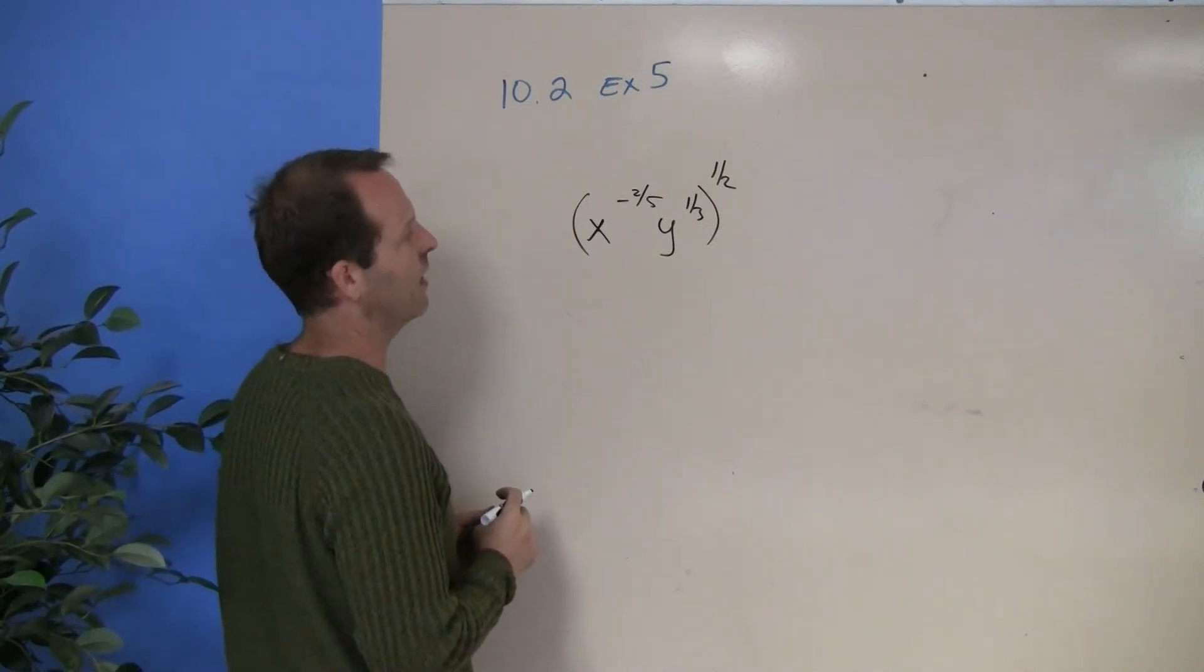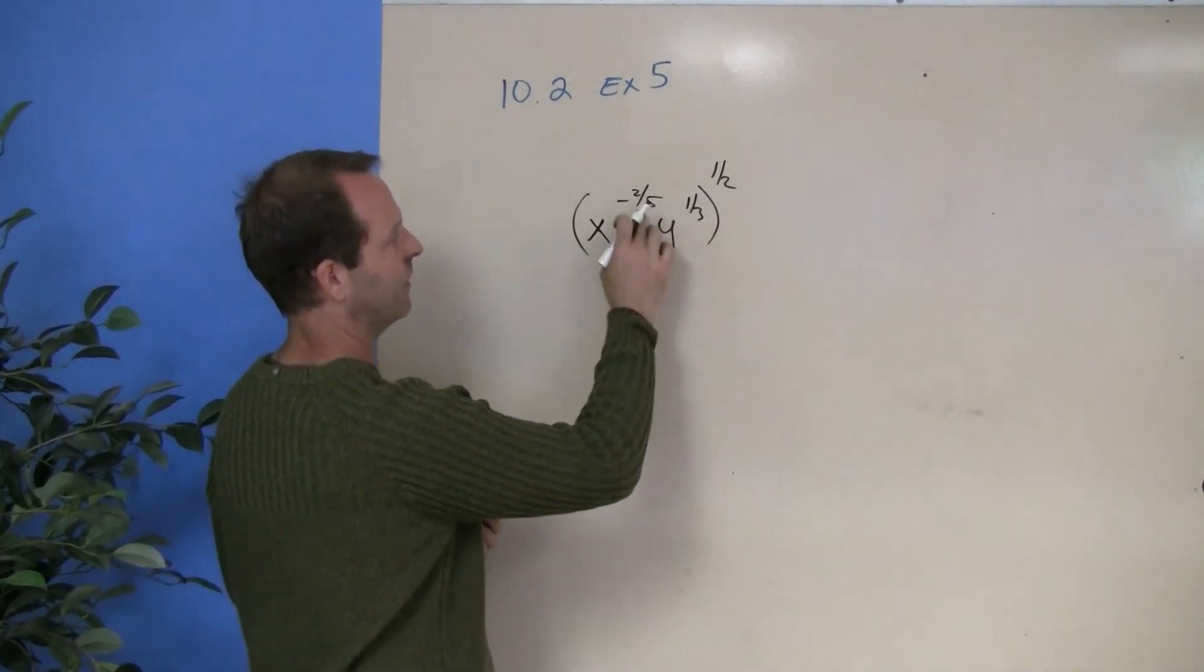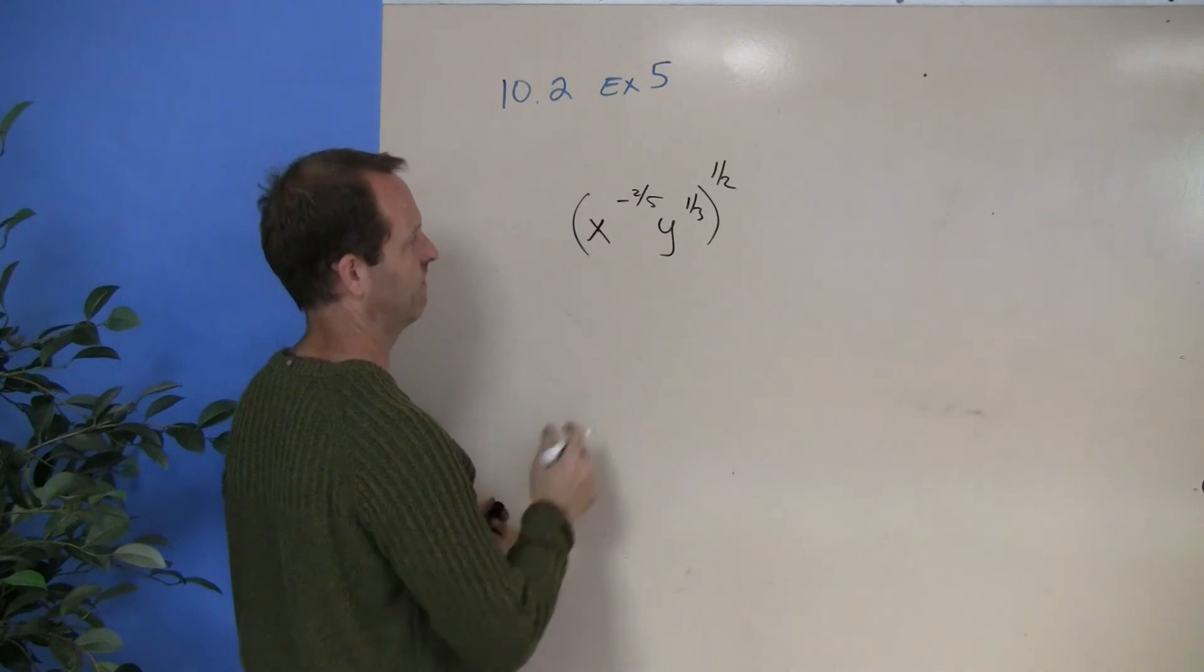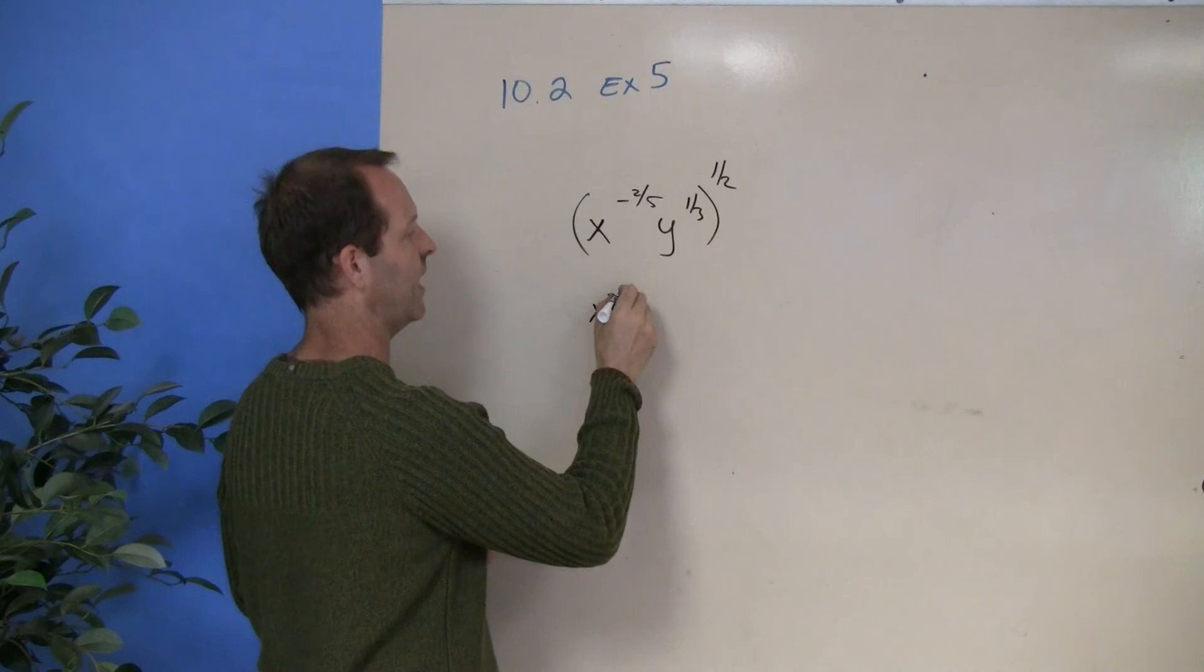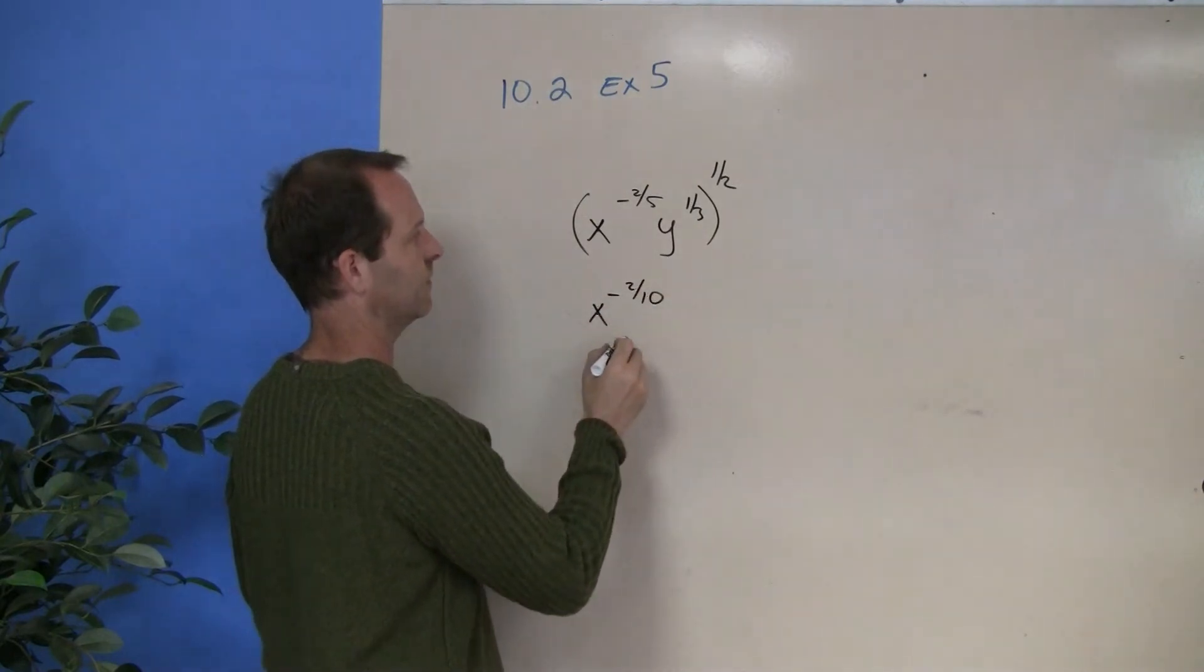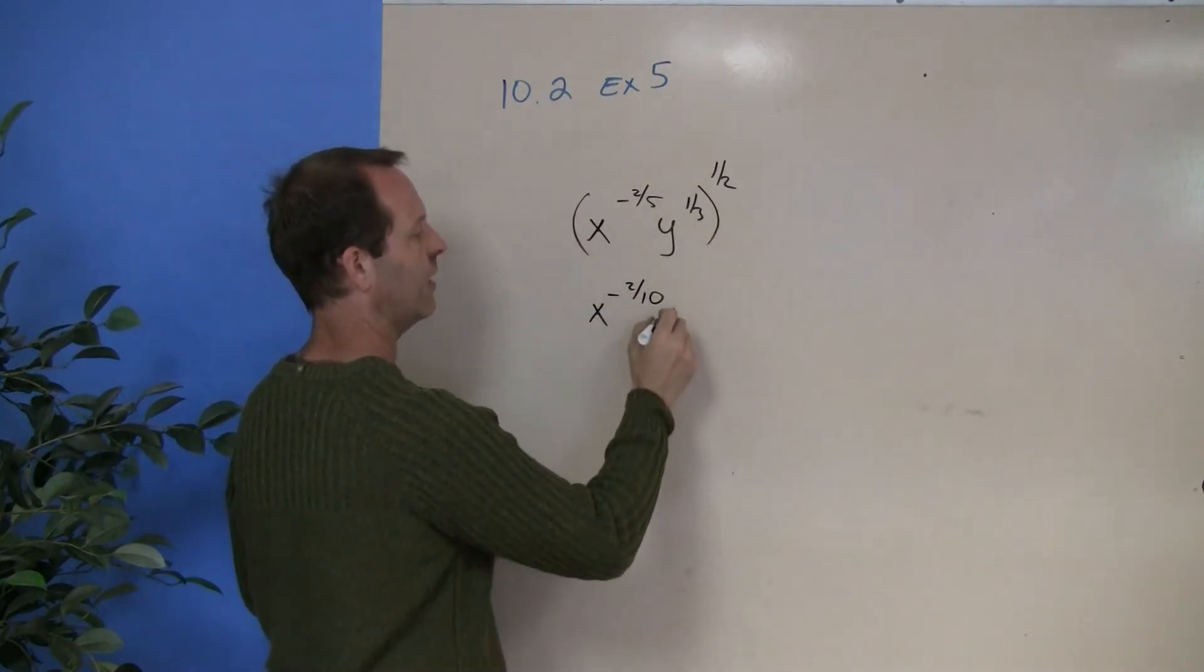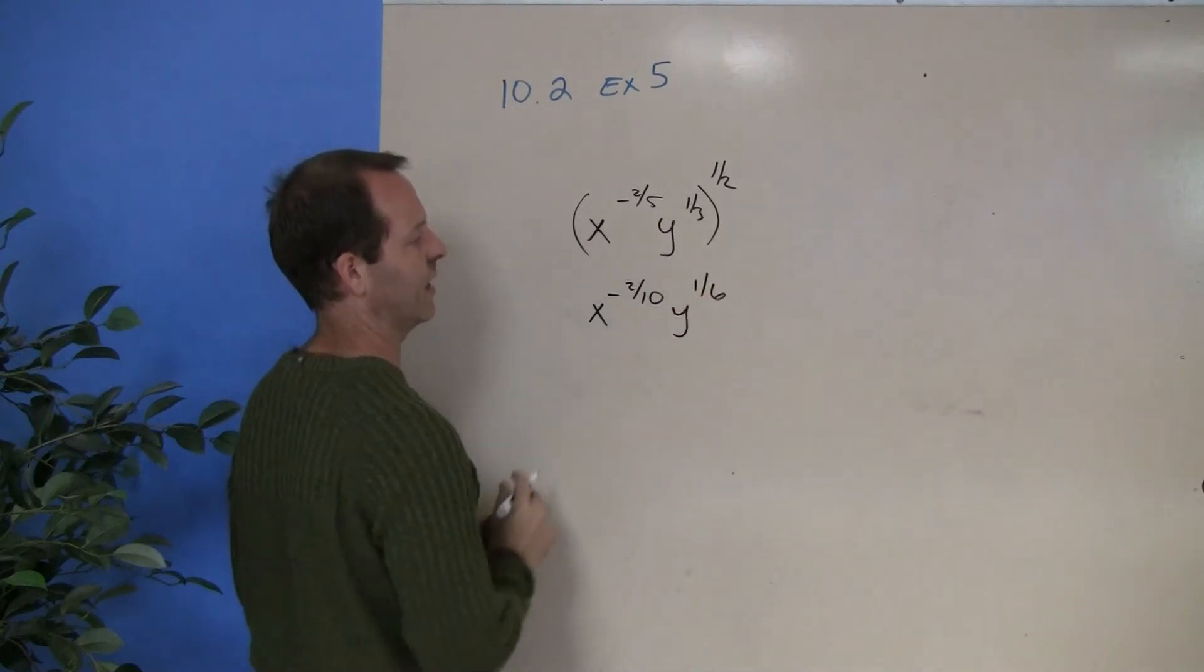Well, the first thing we remember is that I kind of have exponents to an exponent. So this becomes x to the negative 2/5ths times the 1/2, which becomes negative 2/10ths. And then the y, 1/3rd to 1/2, becomes y to the 1/6th.